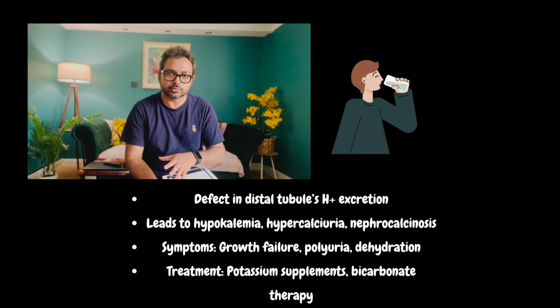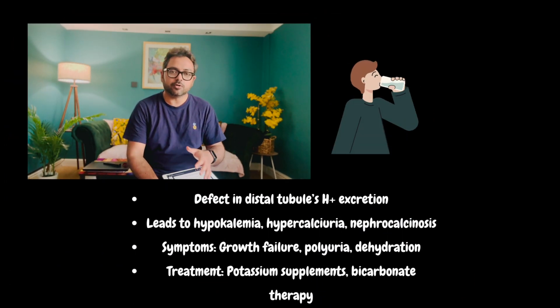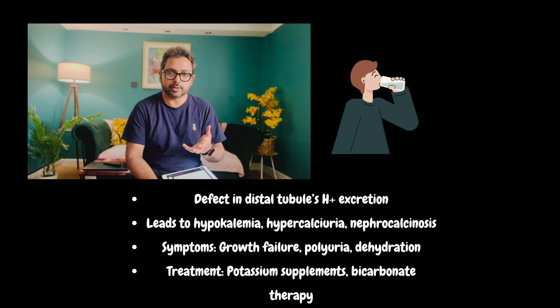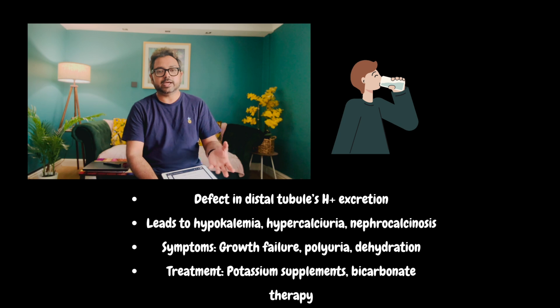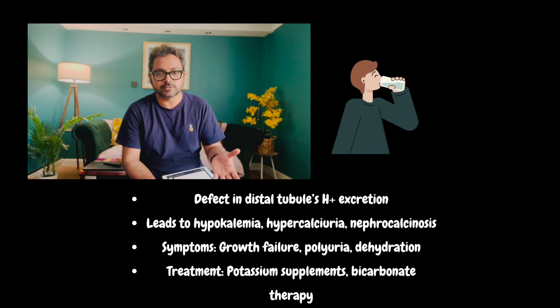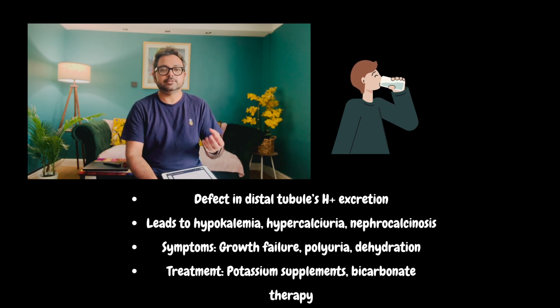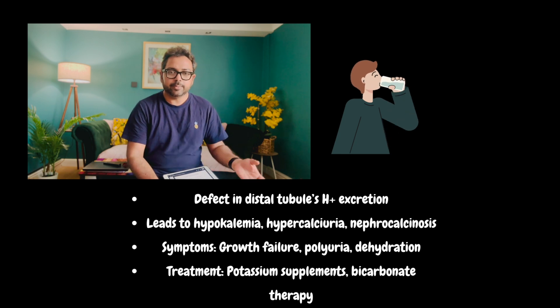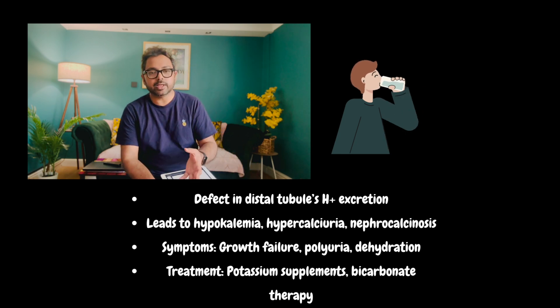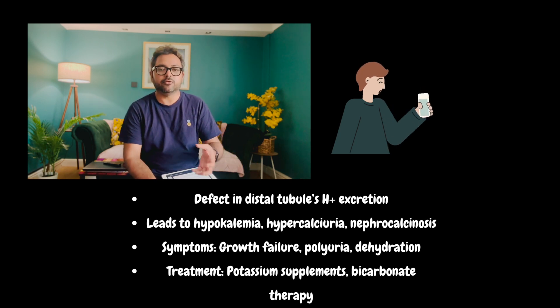Let's start with renal tubular acidosis. It has three varieties: type 1, type 2, and type 4. Type 1 affects the distal convoluted tubule and the pathology is failure to secrete H+. As a result of that, it leads to acidosis, and this acidosis is associated with hypokalemia, hypercalciuria, and nephrocalcinosis.